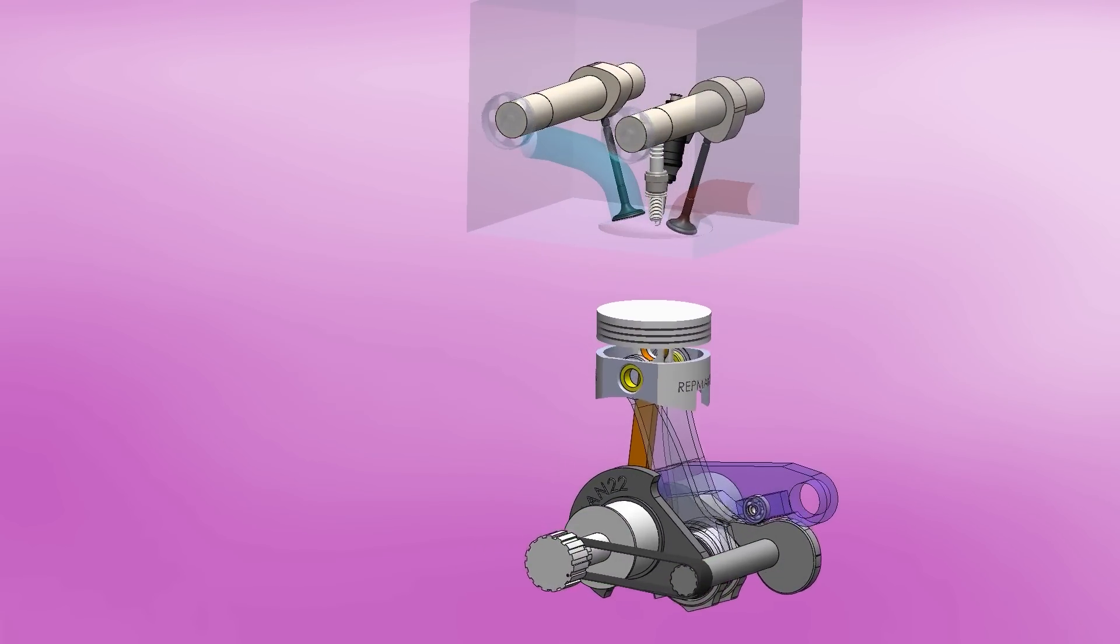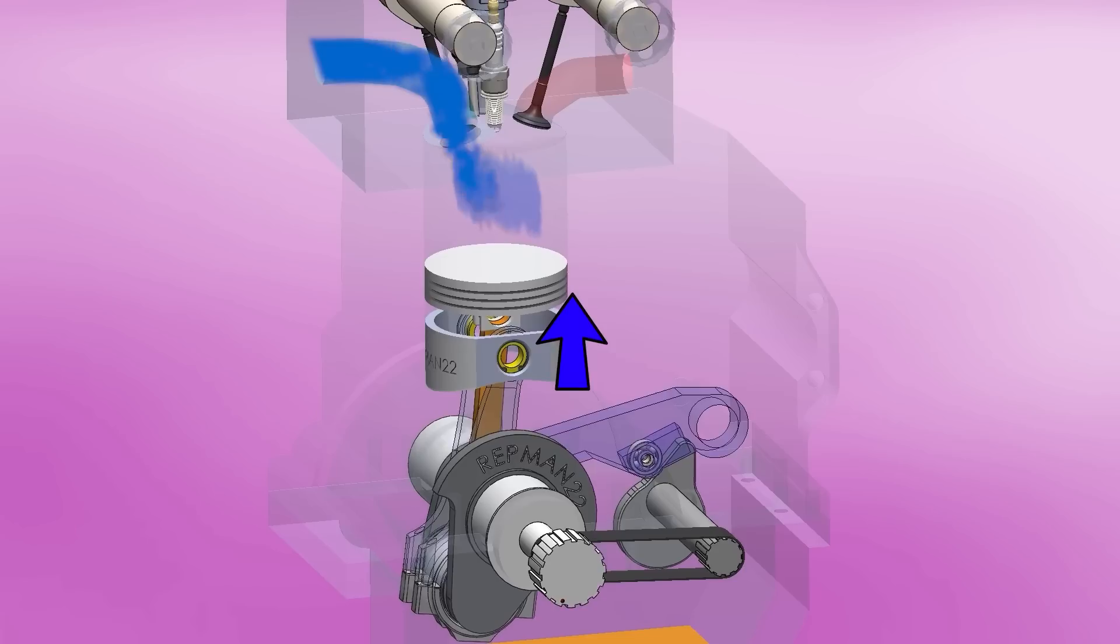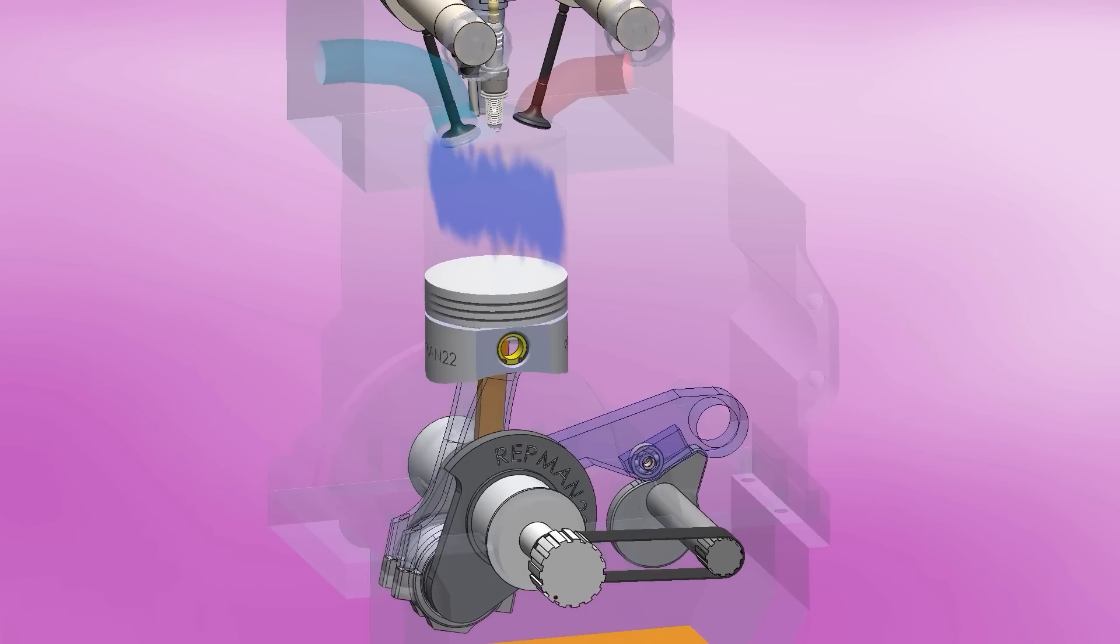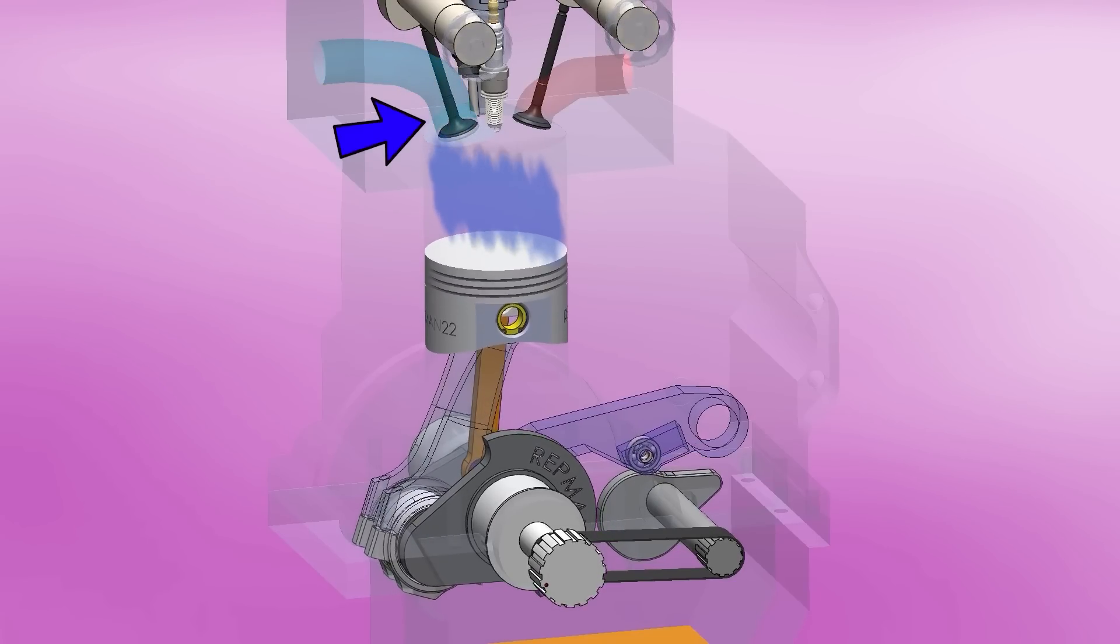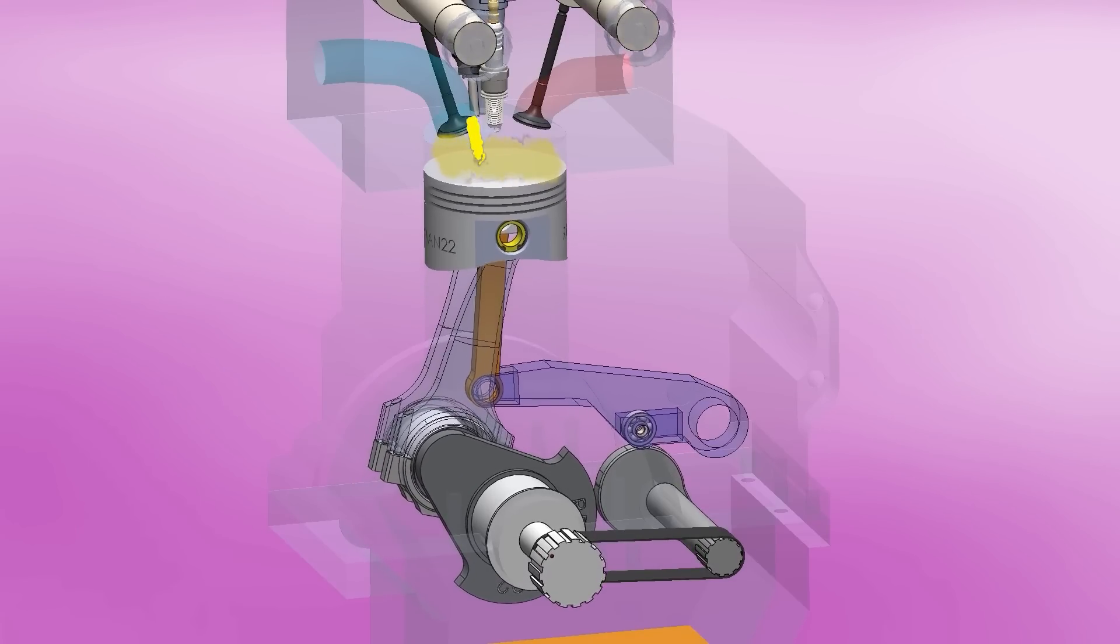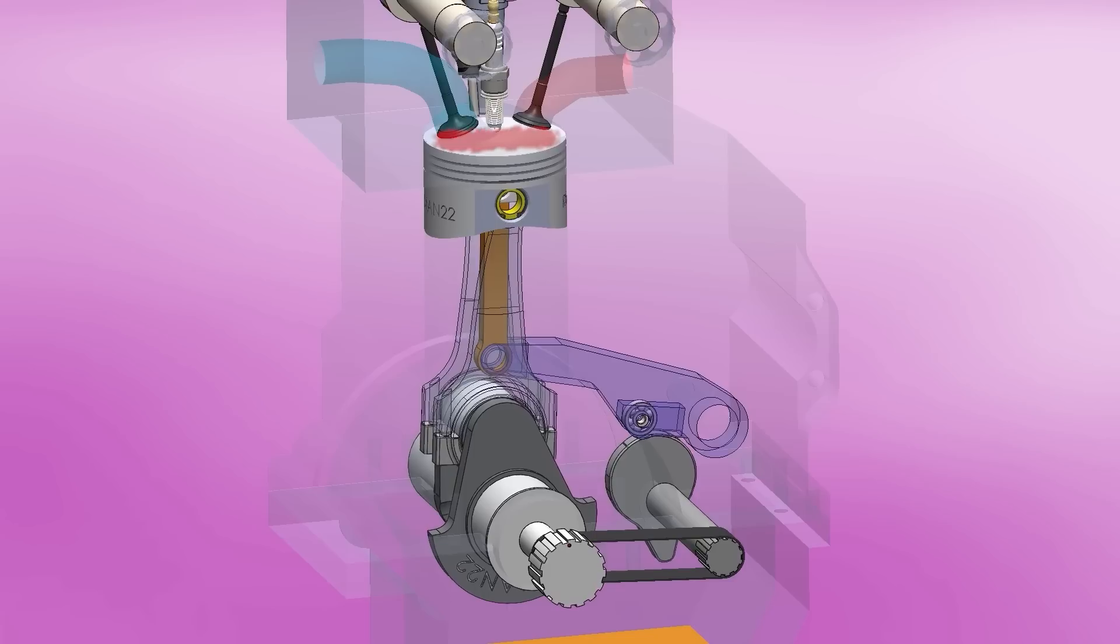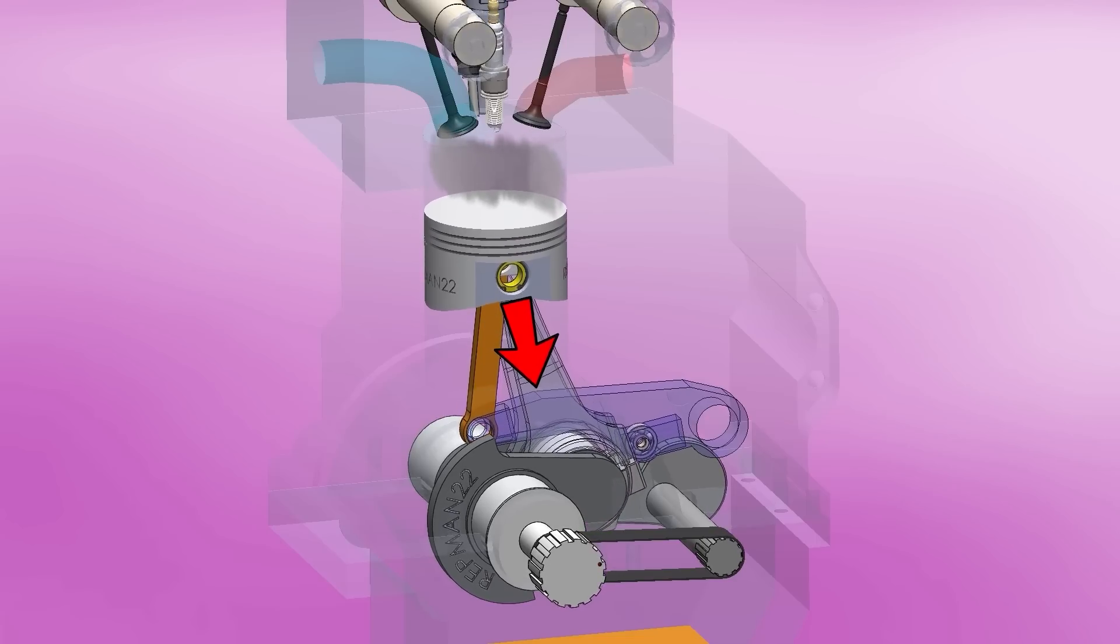The cycle begins with the piston separated. The crown descends, sucking in the air while the skirt goes up. As soon as the pistons join, the intake valve closes and the compression stroke begins. While the piston travels up, the direct injector adds fuel. The spark is fired and the combustion stroke begins. Power is transmitted to the double connecting rod and to the crankshaft.